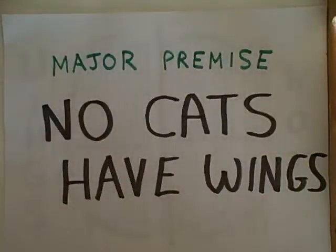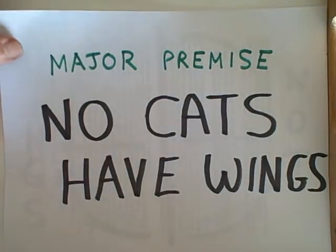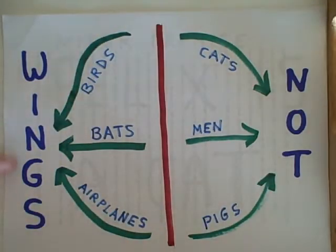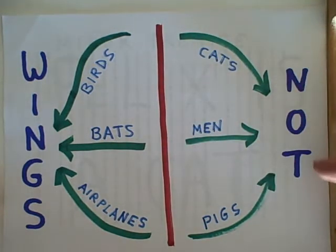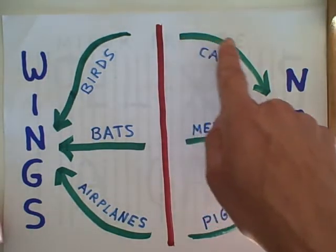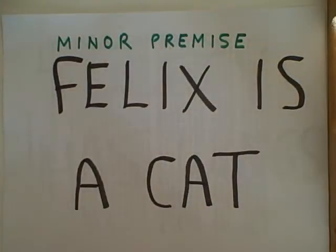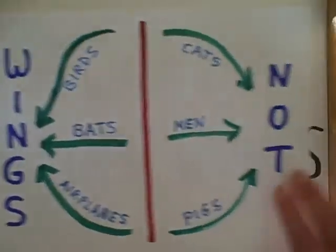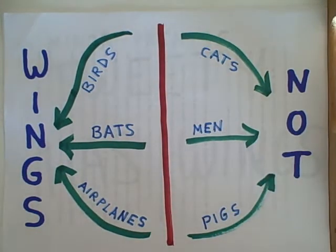These logic paths also work with 'no' statements. No cats have wings is our major premise. The predicate is having wings, so our law of bivalence divides having wings versus not having wings. If we say no cats have wings, we know that cats are on a path away from having wings. Now for a minor premise: Felix is a cat. Once we know that Felix is a cat, we know he's on this pathway and he's going to end up without wings. Therefore, if Felix is a cat, Felix does not have wings.